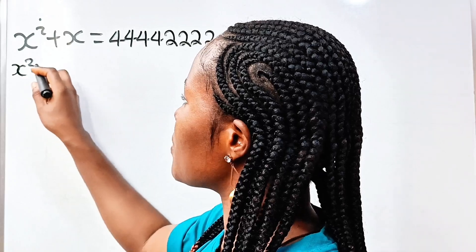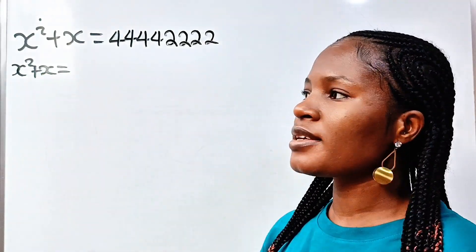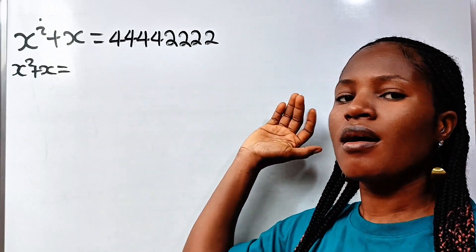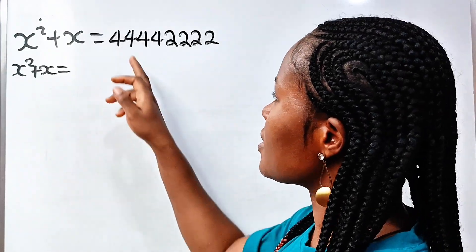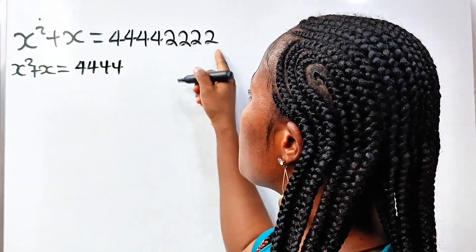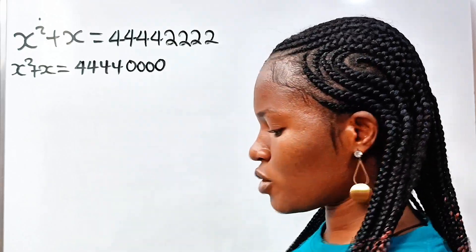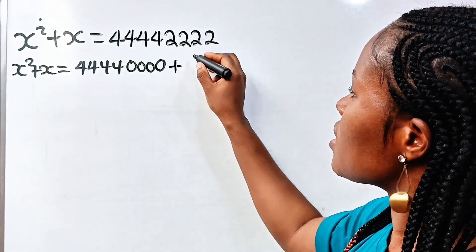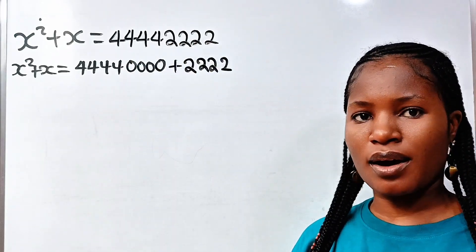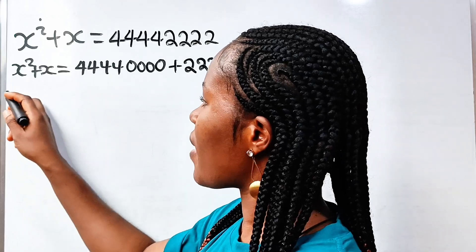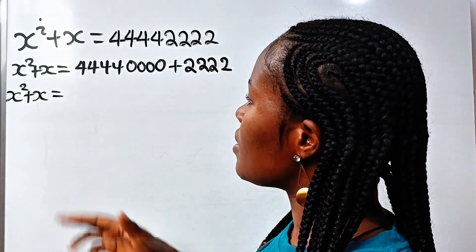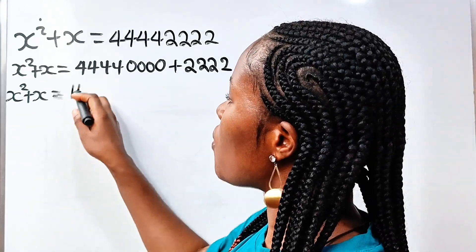We need to solve x squared plus x equals a large number. Let us focus on simplifying it. This large number can be written as 4444 plus 2222 — if we add these we still get the original number back.